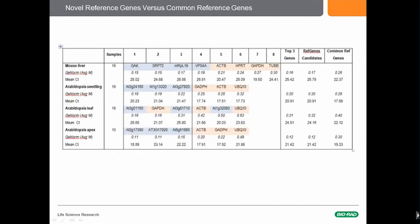If you have a novel system or you're doing something others haven't done before, you may have to look for novel reference genes. Here we can see M values — best on the left, worst on the right — for four different tissues including some Arabidopsis tissues and mouse liver. In pink are commonly used reference genes, and in blue on the left are novel reference genes, which were picked out using the GeneVestigator software.